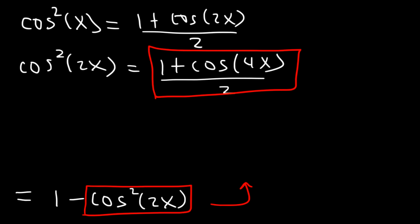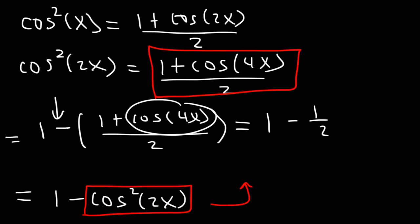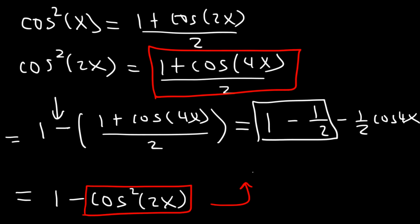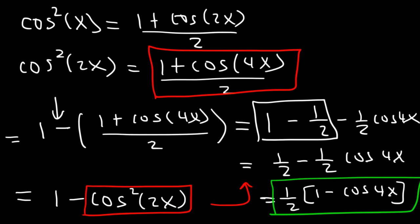Substituting, we get 1 minus (1 plus cosine 4x)/2. Distributing the negative sign and separating the fraction gives 1 minus 1/2 minus (1/2)cosine 4x. Since 1 minus 1/2 is 1/2, we have 1/2 minus (1/2)cosine 4x. Factoring out 1/2, the simplified result is (1/2)(1 minus cosine 4x), which equals our original expression 4 sine squared x cosine squared x.